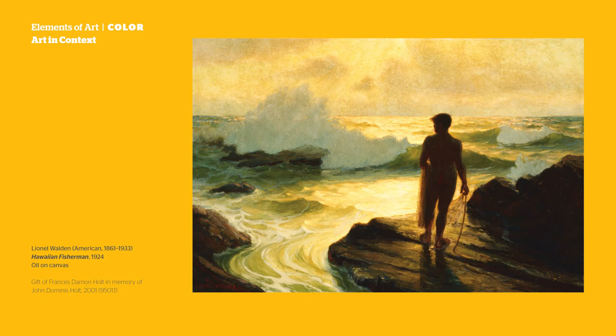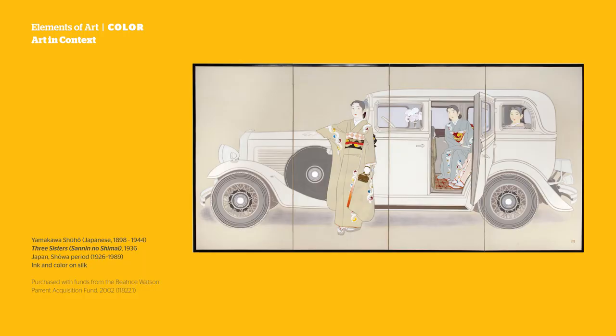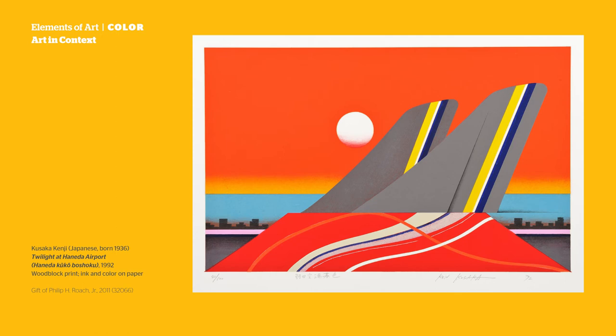How do we categorize colors such as browns, blacks, and grays? Because they are not associated with specific hues, they are considered neutral colors. Look for neutral colors here — and now look for them here.